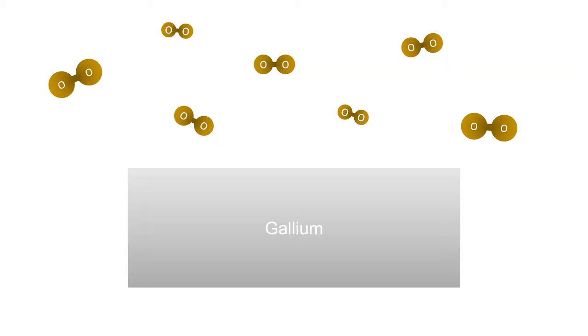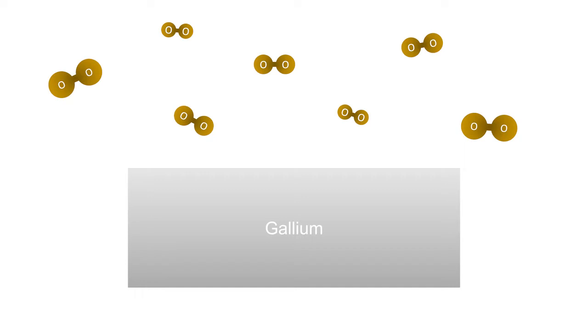One very interesting aspect of liquid metals, which I explored in part for my PhD dissertation, is its ability to form a self-limiting oxide layer. An oxide forms when a material reacts with oxygen. In the case of gallium, it forms gallium oxide, which covers the surface of the liquid metal much like the skin of milk when you leave it out for too long. This oxide is quite important for dictating properties of liquid metal — how it spreads, flows, and attaches to other surfaces.